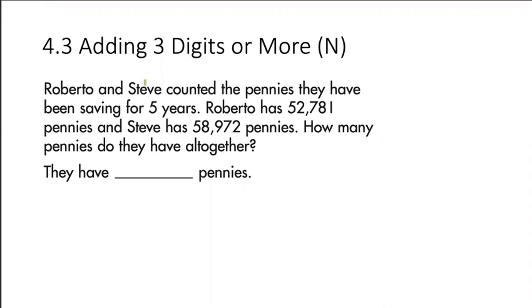So Roberto and Steve, they've been saving, and Roberto has 52,781 pennies. Steve has 58,972 pennies. If we want to know how many pennies they have altogether, we need to add. Altogether meaning that we're adding. So we have 52,781, and we're adding 58,972.